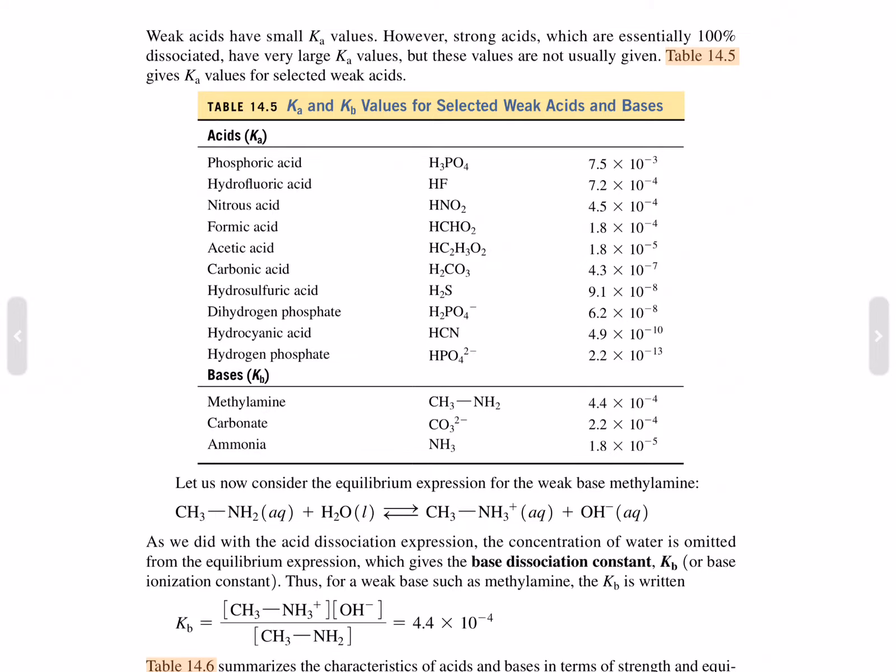Table 14.5 gives the K sub A values for selected weak acids. Acid dissociation constant K sub A and base dissociation constant K sub B values for selected weak acids and bases. Phosphoric acid, 7.5 times 10 to the negative 3. Hydrofluoric acid, nitrous acid, formic acid, acetic acid, carbonic acid. All these acids are weak.